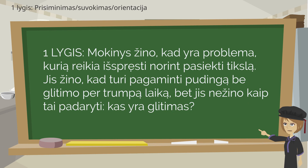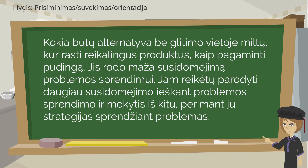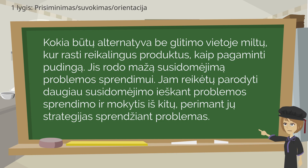Level 1. The student knows there is a problem that needs to be solved to reach a goal. He knows that he needs to make a gluten-free pudding in a short time, but he doesn't know what to do — what gluten is, how to replace flour with a gluten-free alternative, where to find necessary products, or how to make the pudding. He shows little interest in solving the problem. He needs to show more interest in finding solutions and learn from others, imitating their work and strategies.